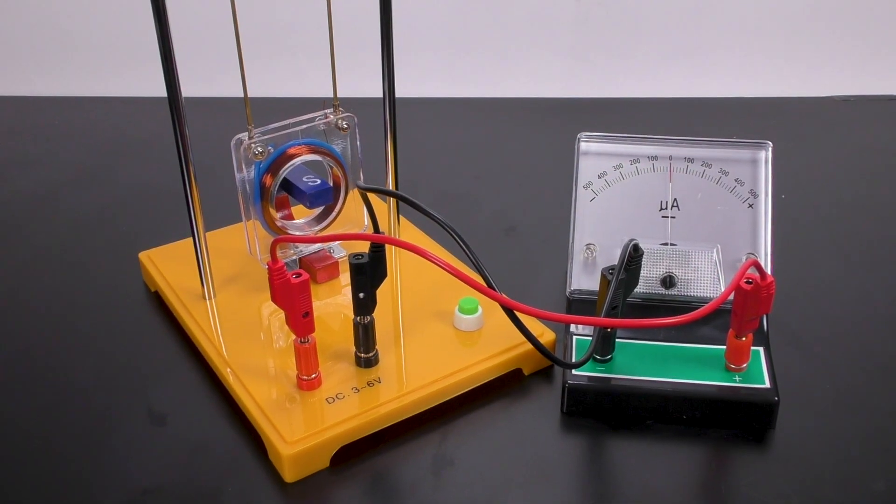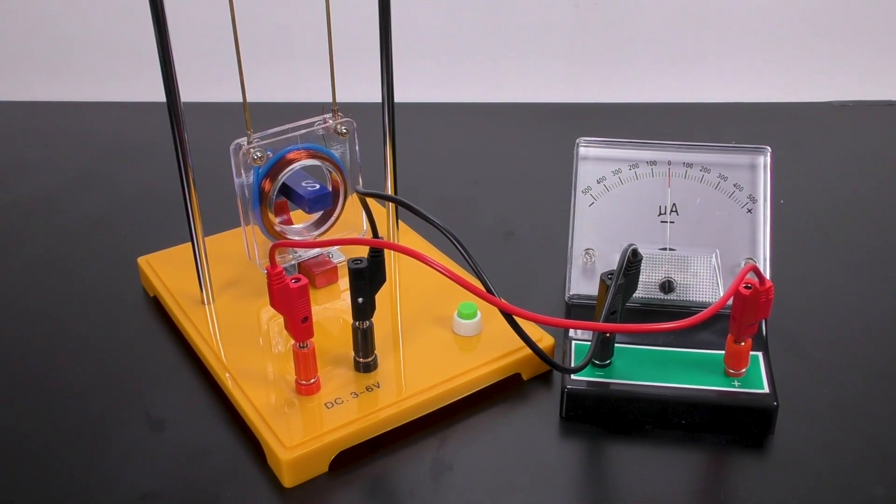For activity 2, producing electricity, we need to replace the power supply with a galvanometer.